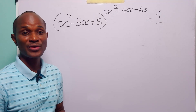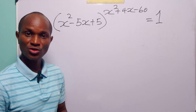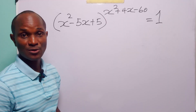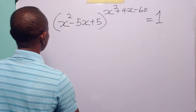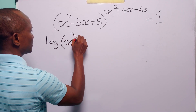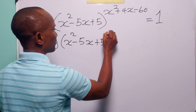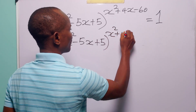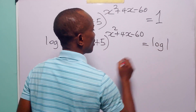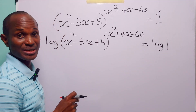Hello and welcome. In this math tutorial, our task is to find the sum of the roots of the equation on the board. To solve this problem, we are going to start by taking the log of both sides of this equation. So we have log of (x² - 5x + 5) to the power (x² + 4x - 60) is equal to log 1.